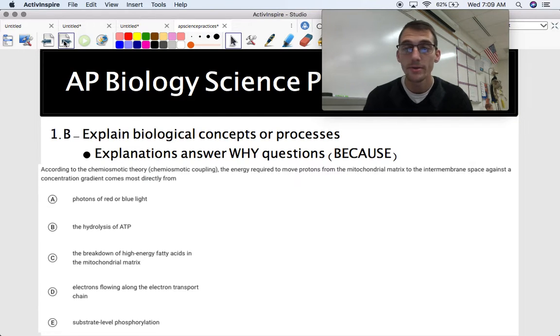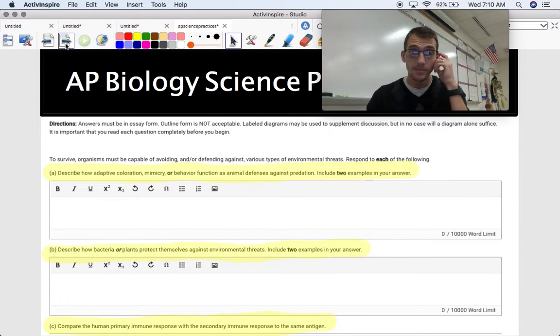So according to chemiosmotic theory, the energy required to move protons from the mitochondrial matrix to the intermembrane space against a concentration gradient mostly comes from, and those are your five options. Again, pause here if you want to try and attempt this one for yourself. But the answer is the hydrolysis of ATP. So you have to be able to explain how ATP works in order to get your mind wrapped around this question here. You have to know how ATP works, and you have to know that protons have to be moved from one part of the mitochondria to the next against a concentration gradient. So you're going to have to know it's active transport, which requires ATP. That's the kind of stuff I'm talking about when it comes to explaining.